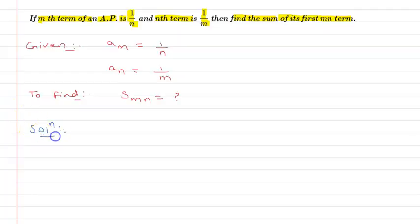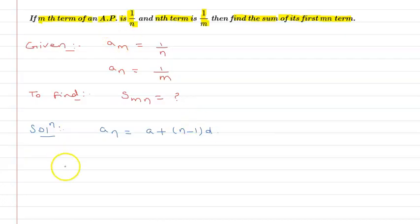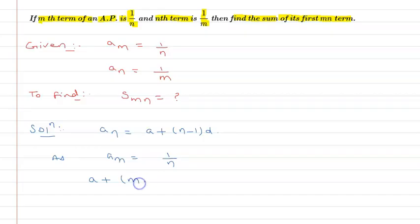As we know, the nth term formula of an AP is given by: a_n = a + (n-1)d. Using this formula, since a_m = 1/n, I can write: a + (m-1)d = 1/n. I will call this Equation 1.